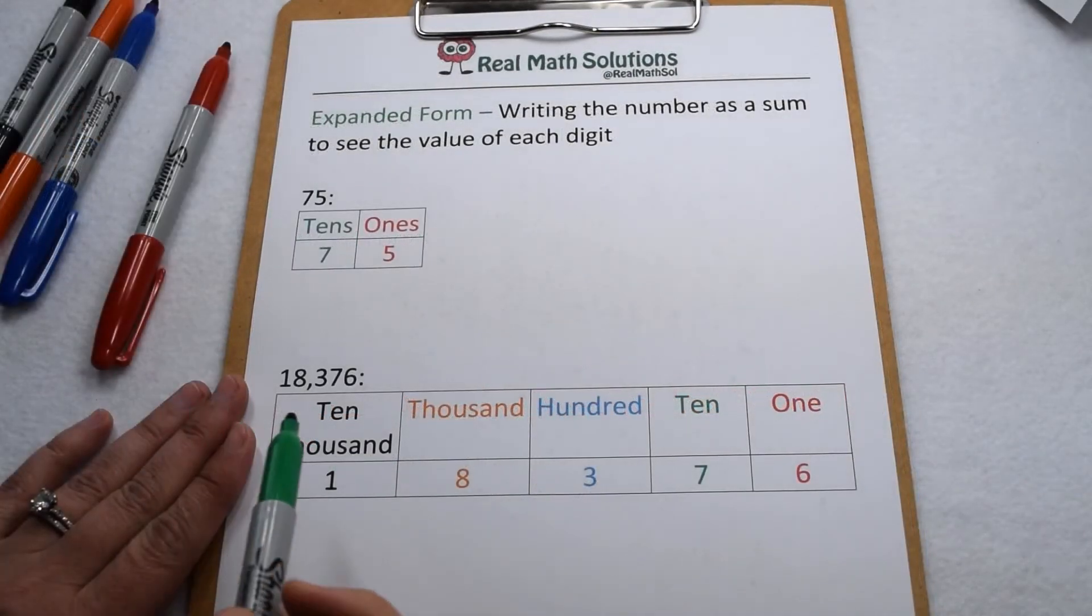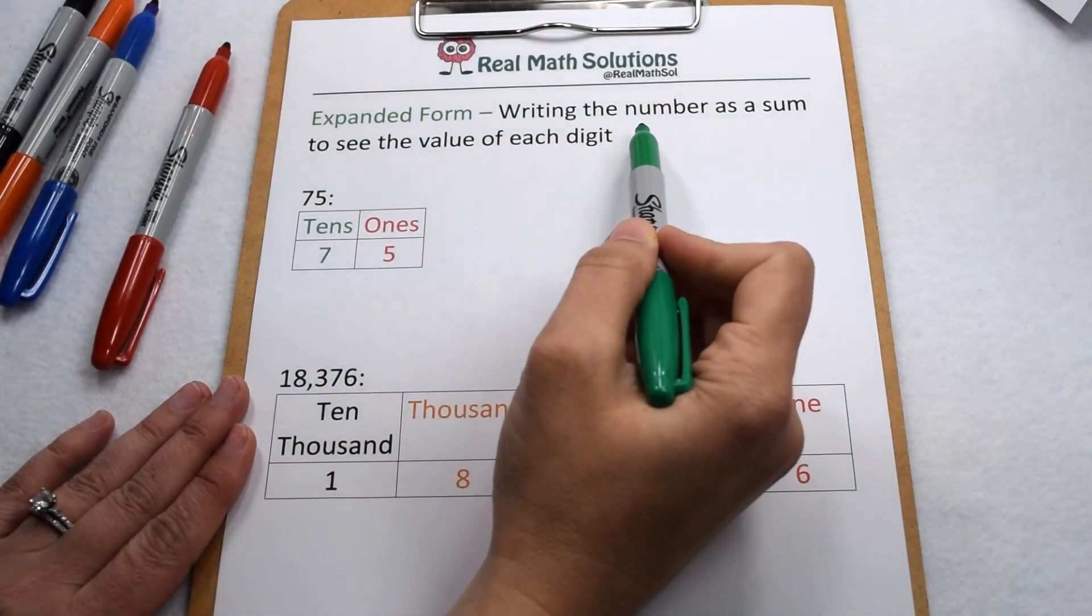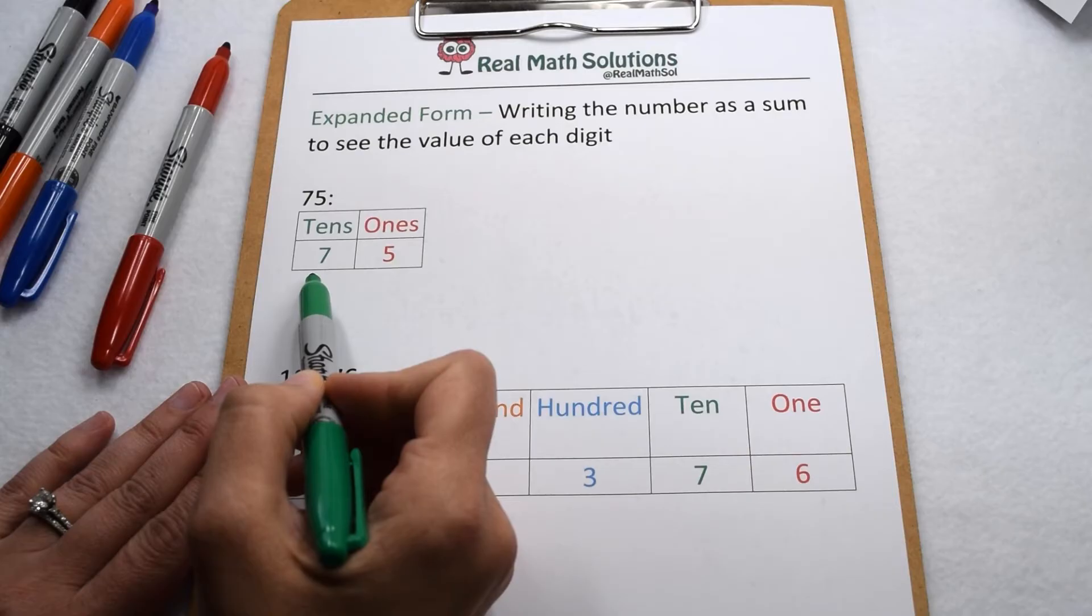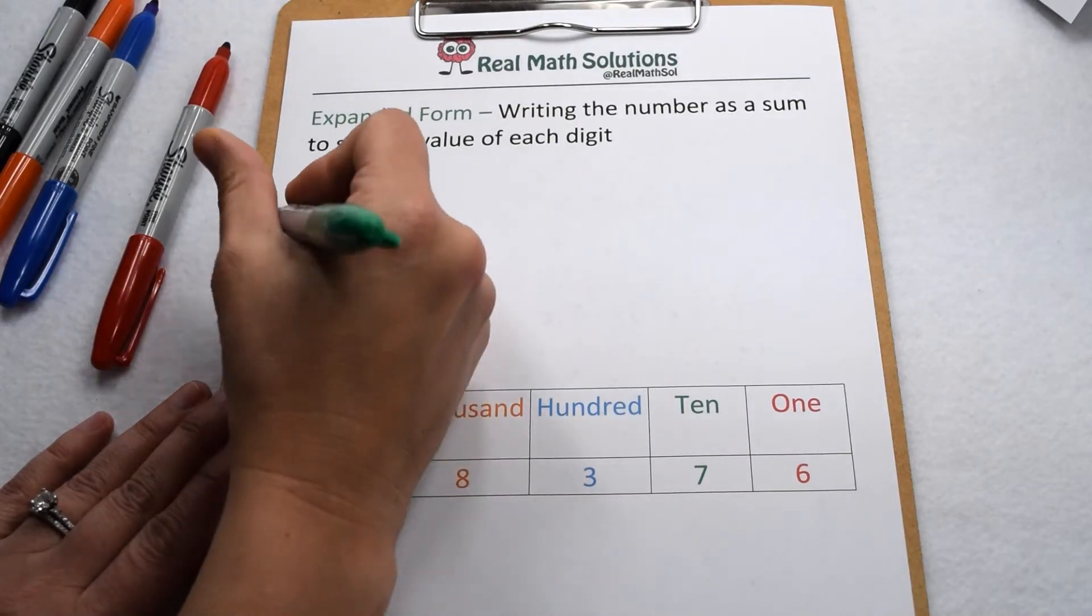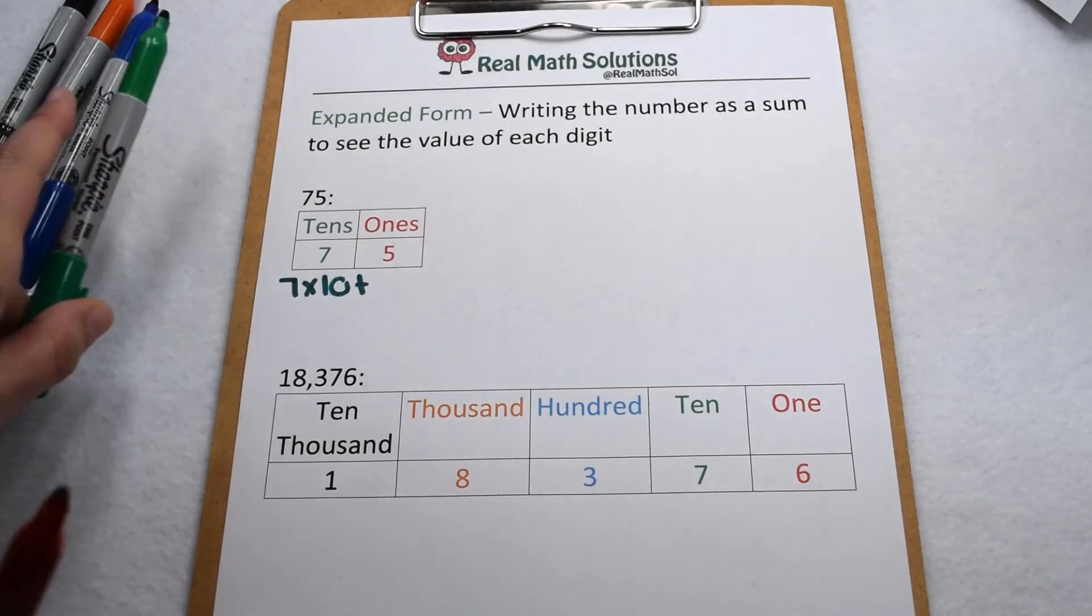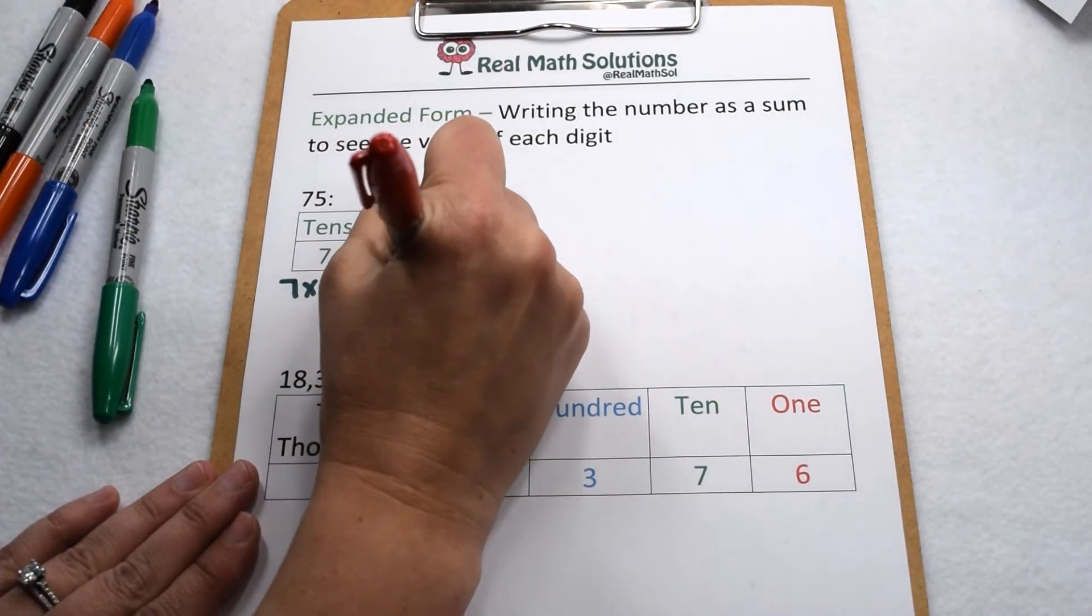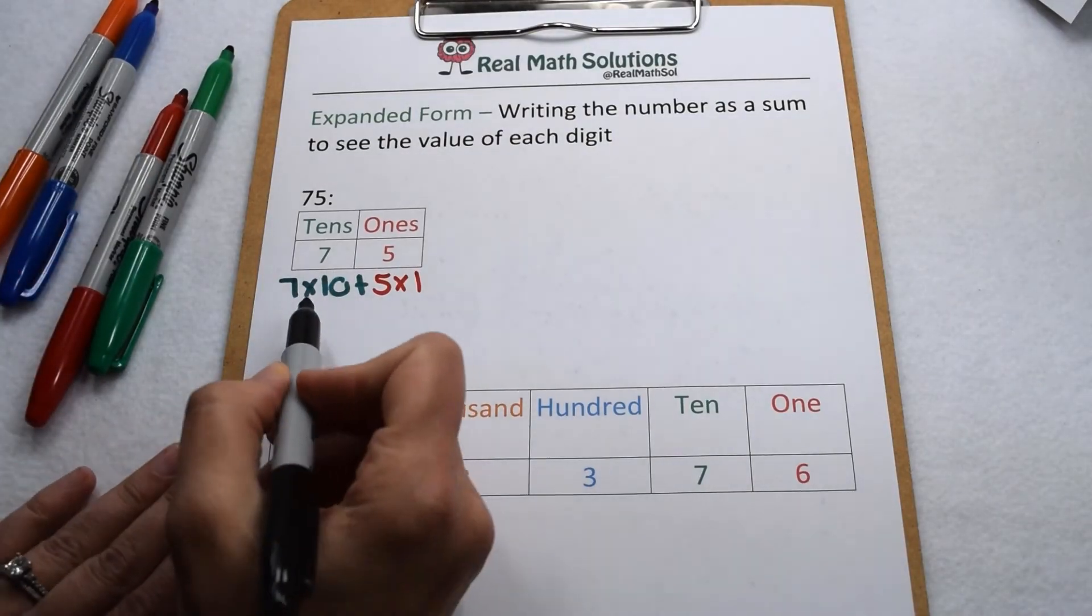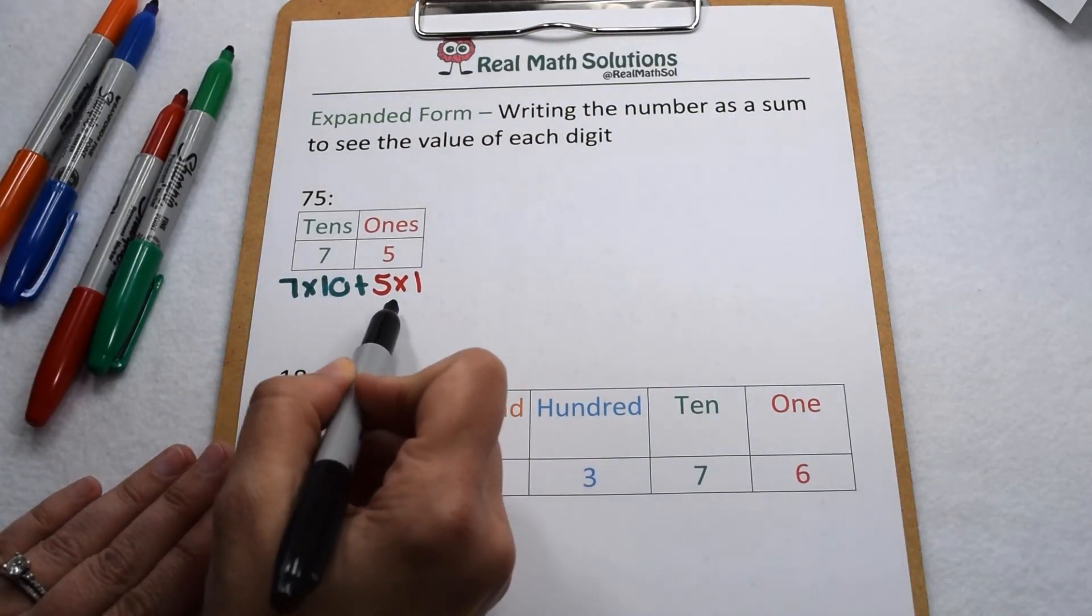We can also express values out in expanded form. Expanded form is where we write the number as a sum to see the value of each digit. So for 75, we have 7 in the tens place. That means that 7 is worth 7 groups of 10. Our 5 is in the ones place, so that means it's worth 5 groups of 1. So in expanded form, 75 would look like 7 times 10 plus 5 times 1.